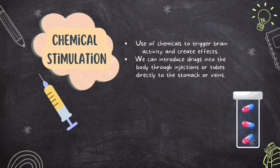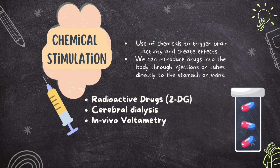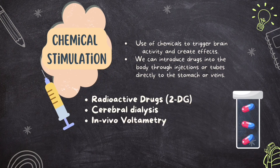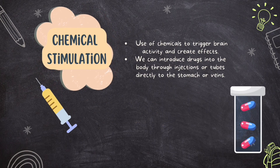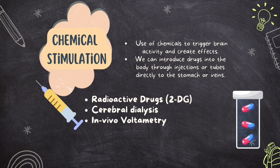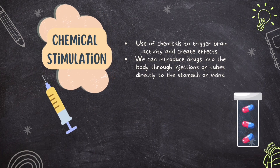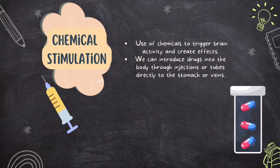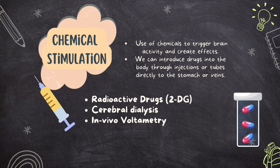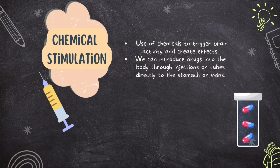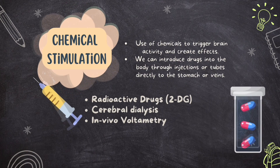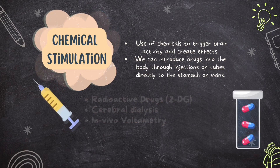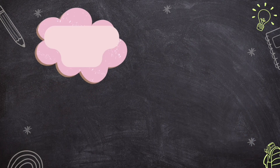The fifth method is chemical stimulation. Chemicals can be introduced through injections or tubes directly into the stomach or veins to trigger brain activity. One technique uses a radioactive drug called 2-deoxyglucose (2DG), injected into an animal. After it's absorbed by the brain, slices of brain tissue are coated and developed like photographs — black spots reveal how neurons interacted with the drug. Cerebral dialysis places a tube in an animal's brain to collect and analyze neurochemicals released during activity. In vivo voltammetry studies the brain's chemical release during activities — shining a light on where chemical messengers work.